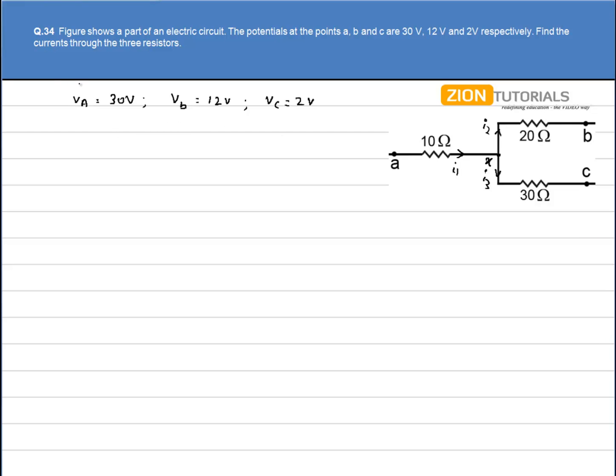I can write potential at A minus potential at X equals I1 times 10 ohms. So, 30 minus X equals 10I1 is the first equation.